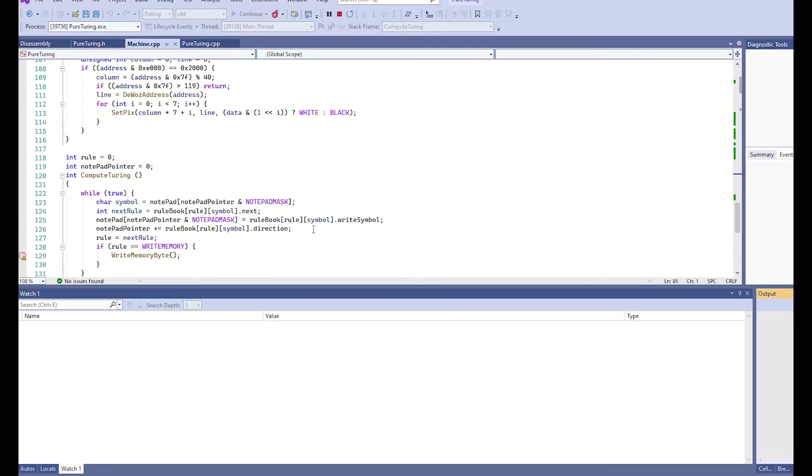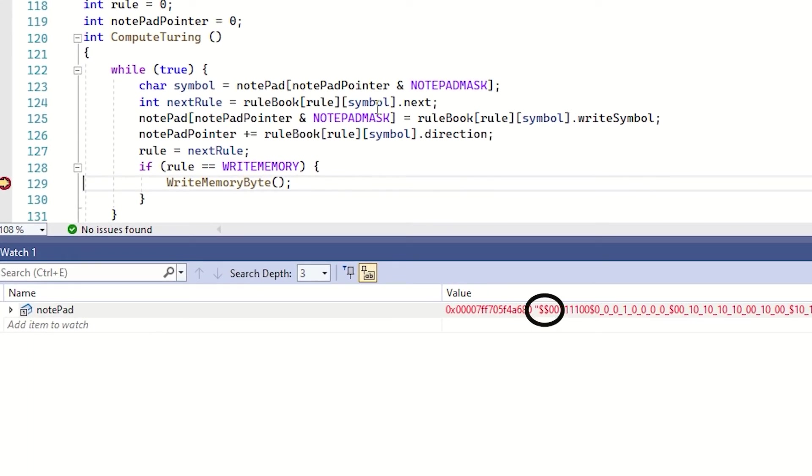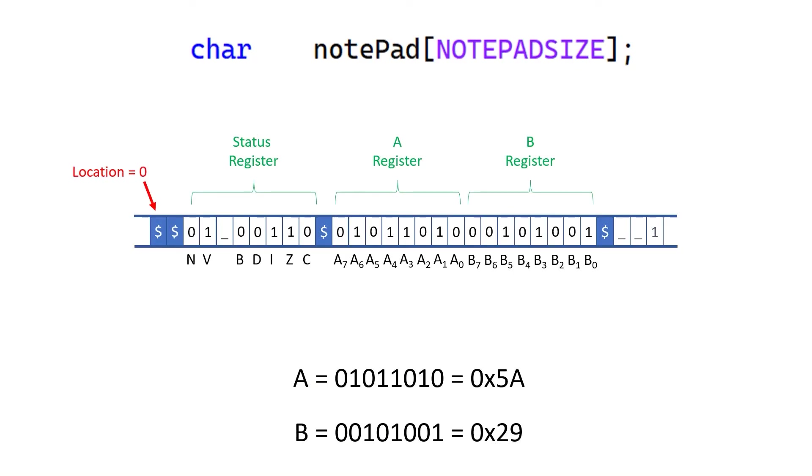When it stops at this breakpoint, we can zoom in and literally inspect the notepad. We can see the double dollar at the start. The status register. The A and the B register might look a bit odd at the moment, but hopefully it'll make more sense by the end of the video. In fact, I'll go over it now.